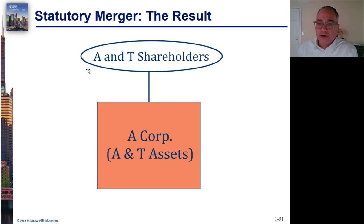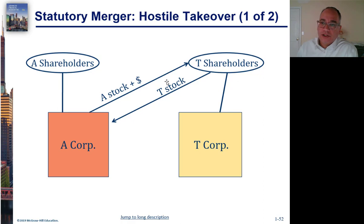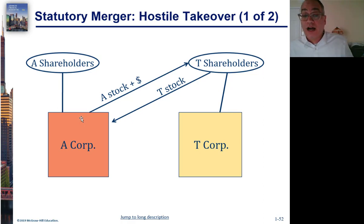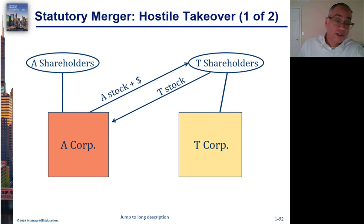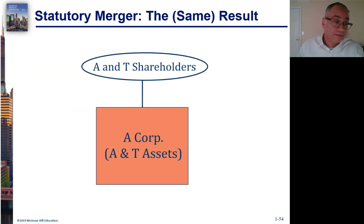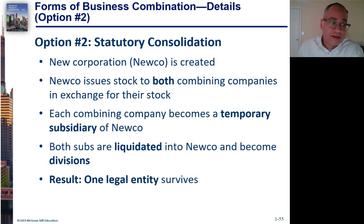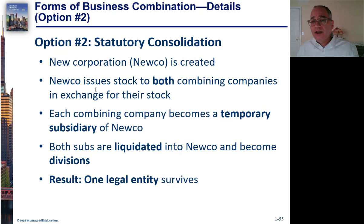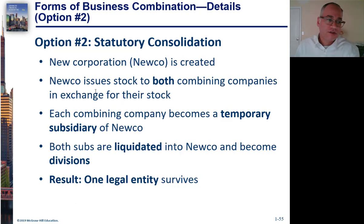What emerges from a peaceful merger is just A, and now T shareholders own A corporation. With a hostile takeover, A corporation convinces T shareholders to sell their stock — either for cash or in a stock-for-stock exchange — until A acquires a majority ownership of T, and eventually you have just one company. This can also be done as a statutory consolidation, where you create a new company that issues stock to the two combining companies, and then the two companies are liquidated into the new company, leaving only one company.